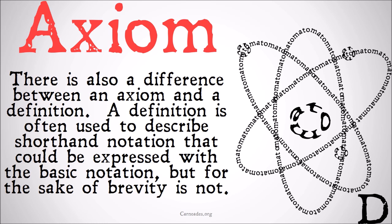There's also a difference between an axiom and a definition. A definition is often used to describe shorthand notation that could be expressed with the basic notation available, but for the sake of brevity is not. You're not assuming something substantive with a definition — you're just saying this long string of characters can be reduced to a simpler one. Definitions are taken without proof, but if you removed a definition, your system should still work fine.